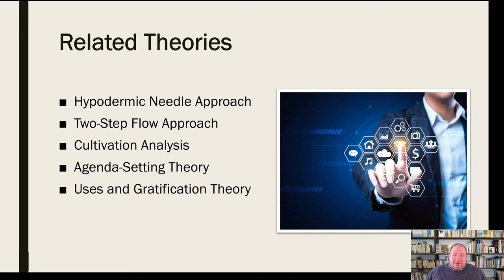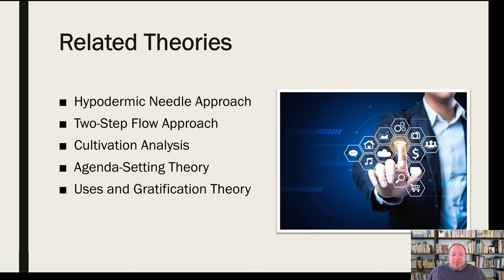Uses and gratification theory posits that people will pursue media that provides them with pleasure — things they enjoy or feel are important and can influence their lives. People will seek out media that performs those functions and exclude others, gravitating toward specific platforms or channels they feel are especially important for enjoyment or functional information. These theories form a foundation for reception analysis, and I want to spend more time on some more specific areas.